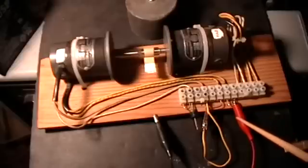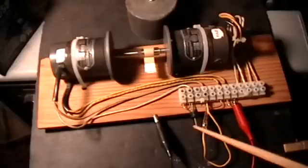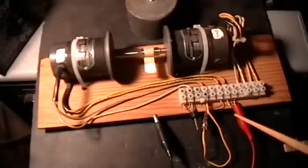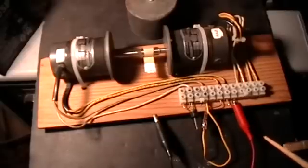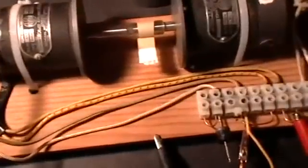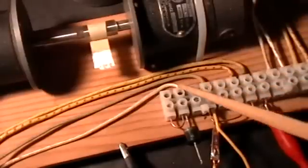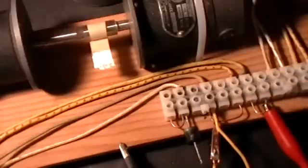So, here's the plus lead from the power supply, 30 volt DC power supply, and here's the minus lead that I'll be hooking up in a moment. Right now the way I have it wired is, you can see it a little bit better. Remember these are the armature wires and these are the field coil stator wires.